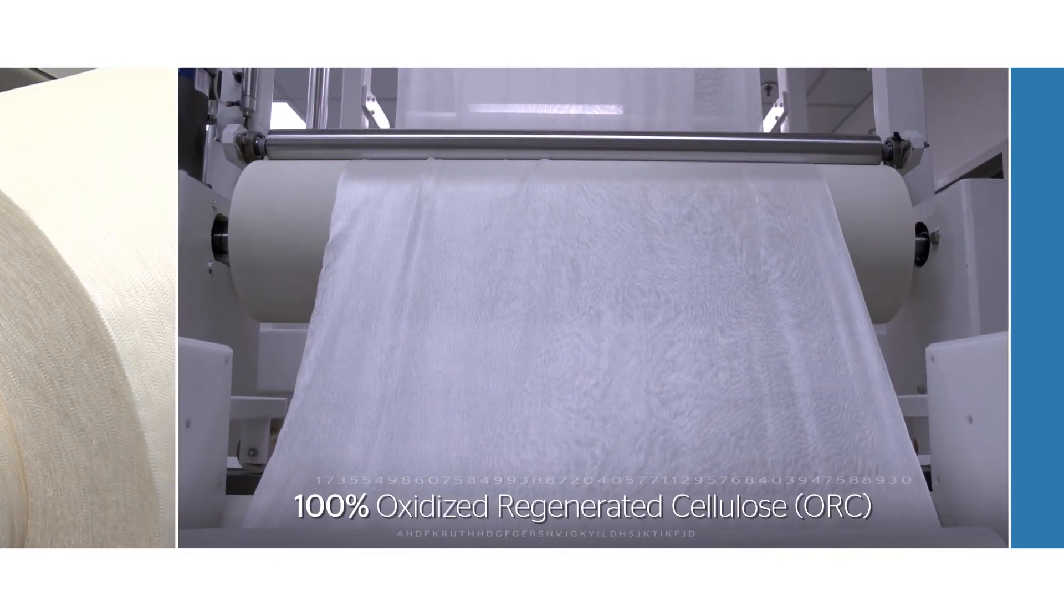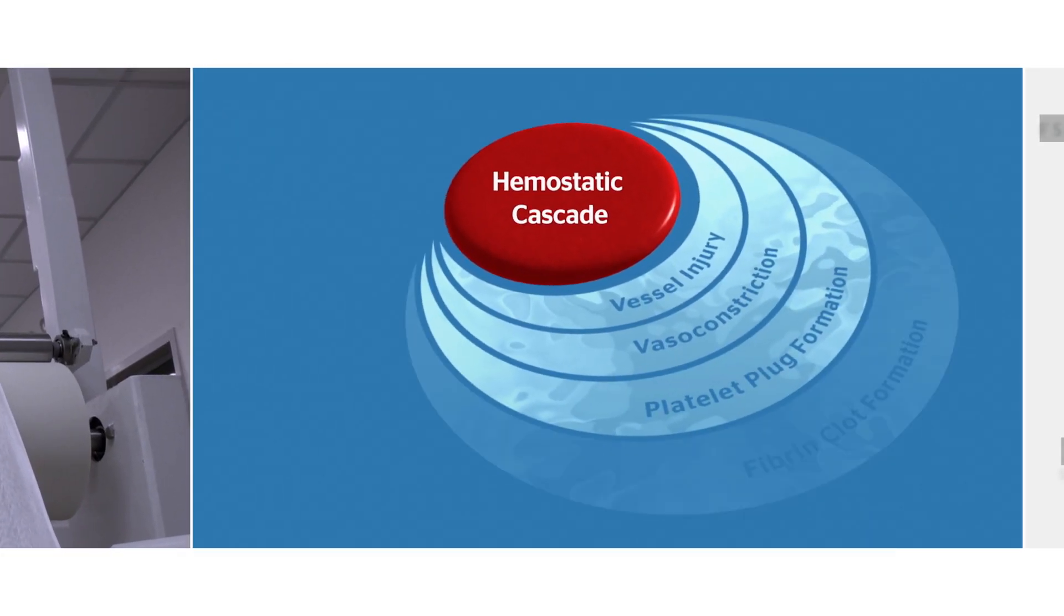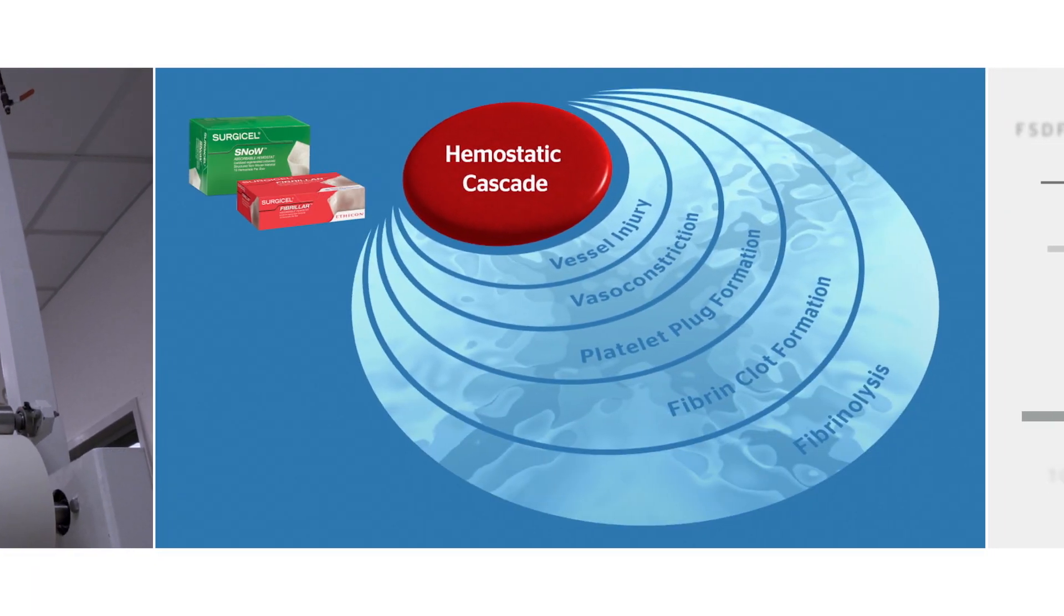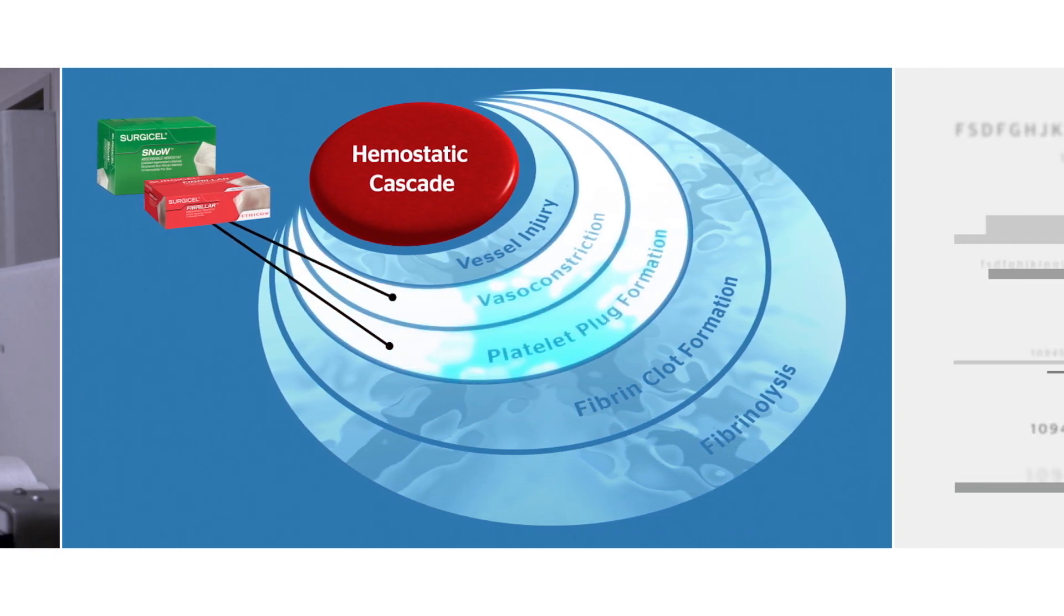All Surgicel hemostats are 100% oxidized regenerated cellulose, a bioabsorbable material that acts as a physical barrier to bleeding while also helping initiate vasoconstriction and platelet plug formation.